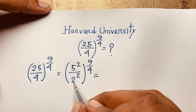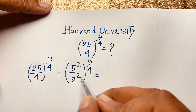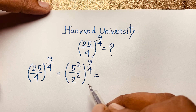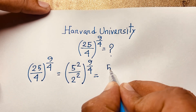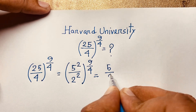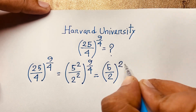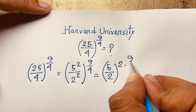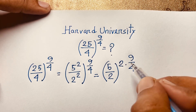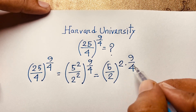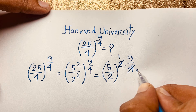...a^n over b^n equals (a/b) to the power n. According to this law, this expression becomes (5/2) to the power — the 2s cancel — giving us (5/2) to the power 9/2.